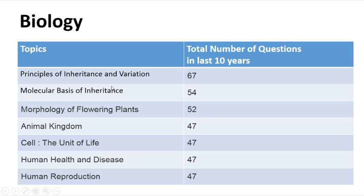For example, in Principles of Inheritance and Variation, if you count questions from year to year for the past 10 years, totally 67 questions have been asked — the most important topic. Followed by Molecular Basis of Inheritance with nearly 54 questions, Morphology of Flowering Plants with 52 questions, Animal Kingdom with 47 questions, and Cell, Human Health and Disease, and Human Reproduction each around 40-47 questions.